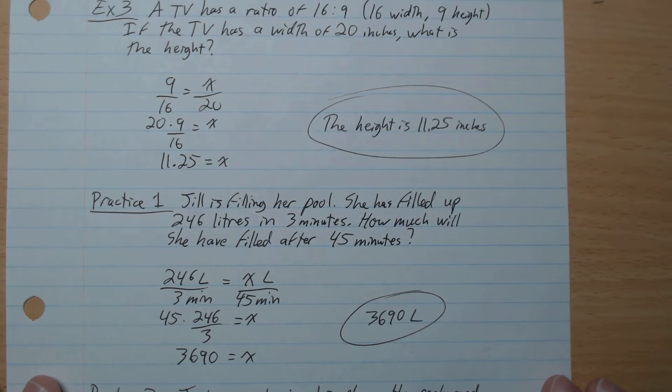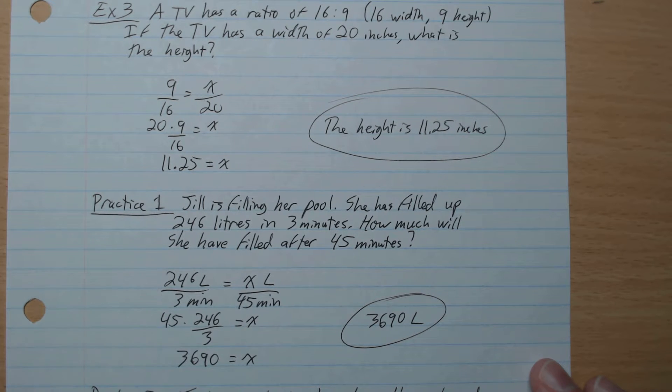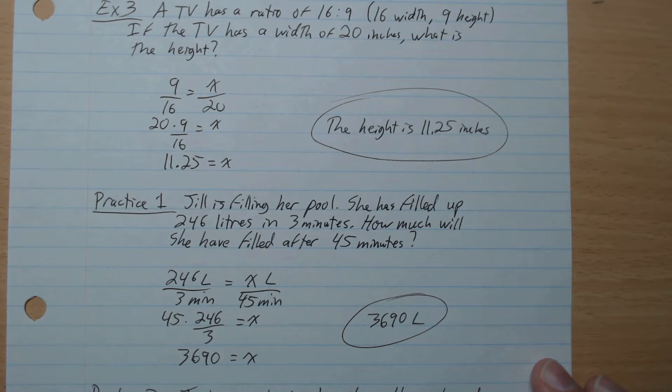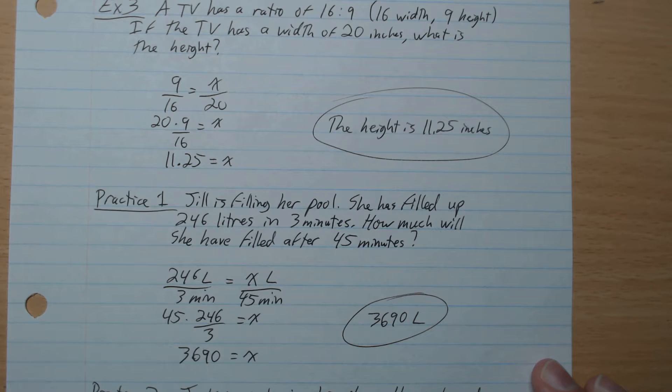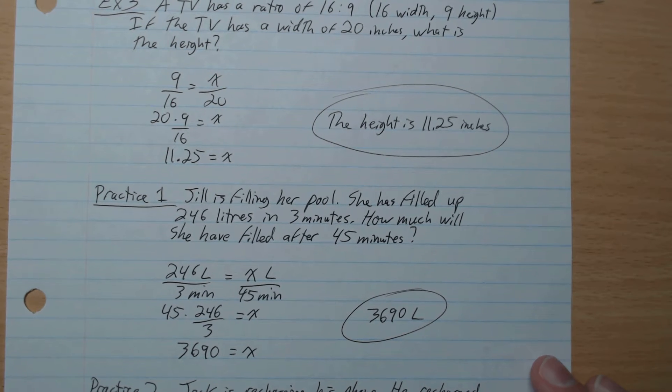Okay, we're back. We have 246 for every 3 minutes is unknown for 45 minutes. We go times 45 both sides, and x is 3690. So the amount is 3690 liters like that.